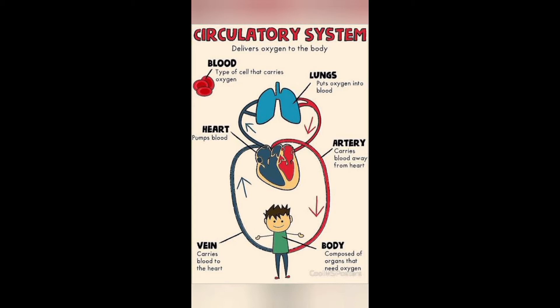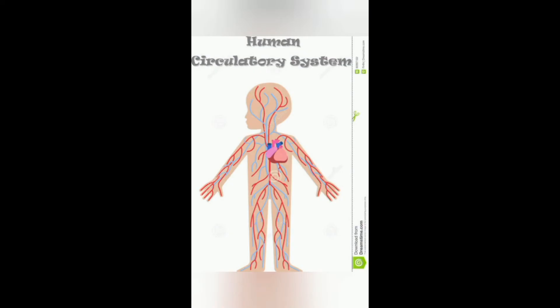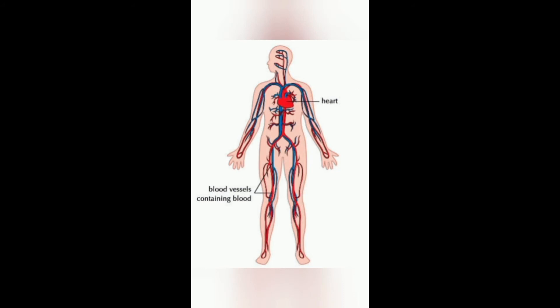Our heart is located on the left side of the chest, and the heart pumps blood to all parts of our body. Many tubes come out of the heart and these are called blood vessels. Blood vessels carry the blood to all parts of the body. Blood contains oxygen and absorbed food. Blood also collects waste from all parts of the body and takes it to the excretory system.